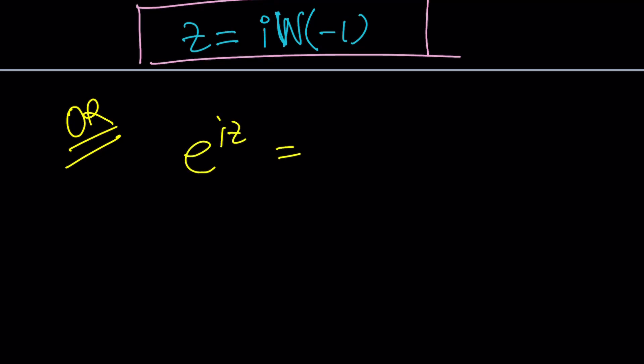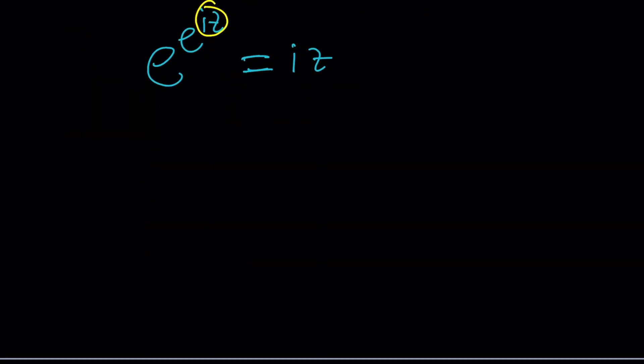E to the iz equals iz. Notice that iz is the same as e to the iz. So this iz can be replaced with e to the iz. This can be written as e to the iz. So now we have e to the iz equals iz. But we have another iz here, which can be replaced with e to the iz. And if you keep doing this, you're going to get e to the power, e to the power, e to the power forever. That's just going to equal iz.